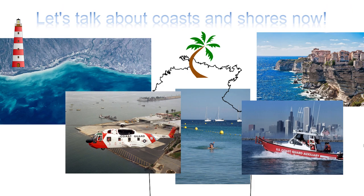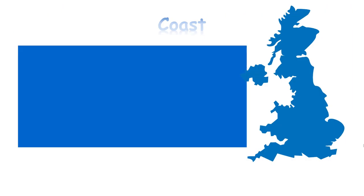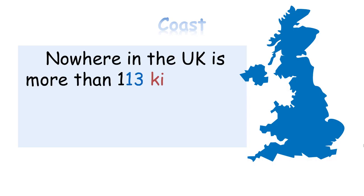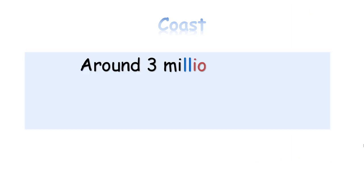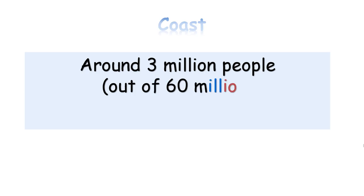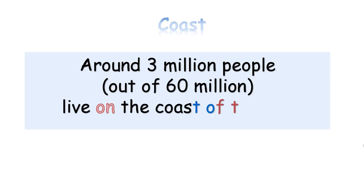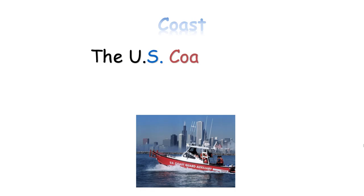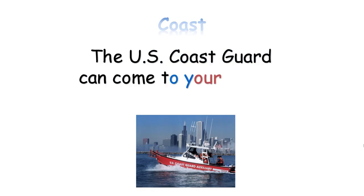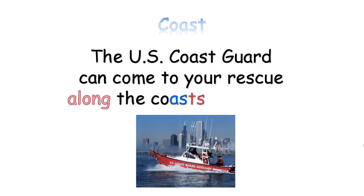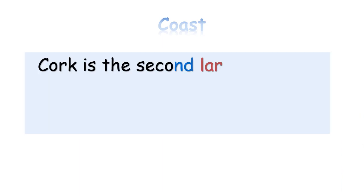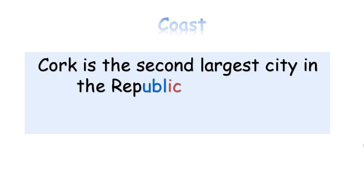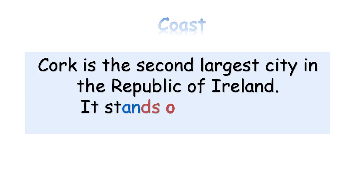Let's talk about coasts and shores now. Nowhere in the UK is more than 113 km from the coast. Around 3 million people out of 60 million live on the coast of the UK. The US Coast Guard can come to your rescue along the coasts of the United States. Cork is the second largest city in the Republic of Ireland. It stands on the coast.